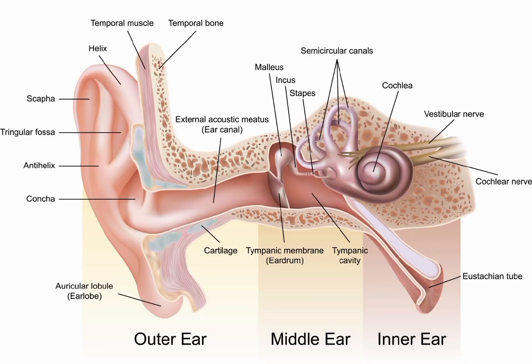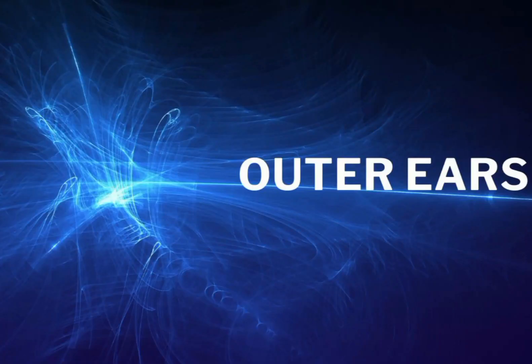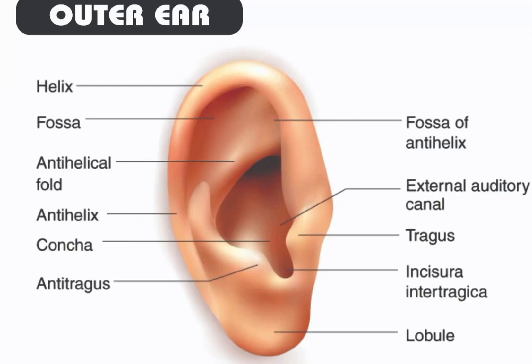Major Parts of Ears. Outer Ear: The outer ear consists of three main parts. Pinna, also called the auricle, is the visible part of the ear that collects sound waves and directs them towards the ear canal.